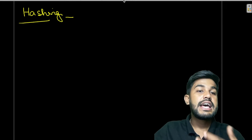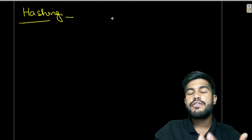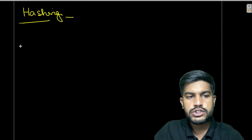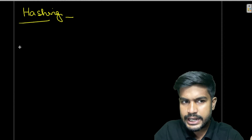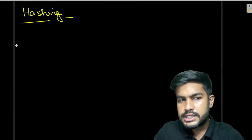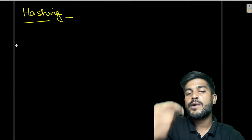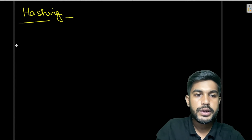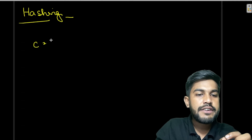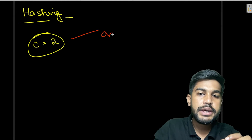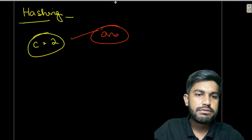Let's move to the hashing approach. The idea is we count the occurrence of each character, then we start from the very beginning of the string and check which is the first character having a count of two. We report that as the answer. I already did this dry run earlier.